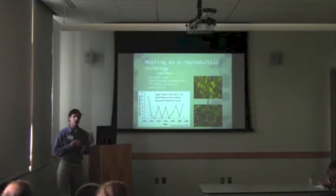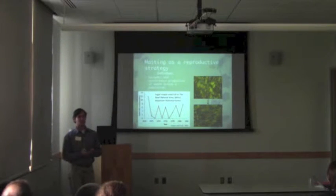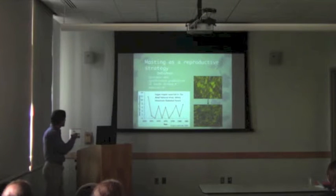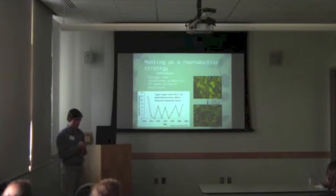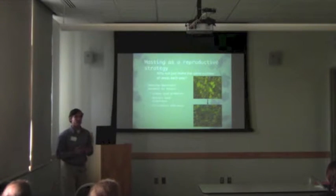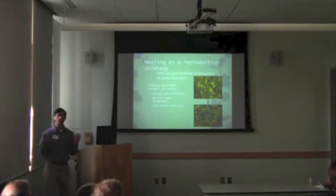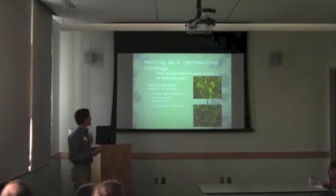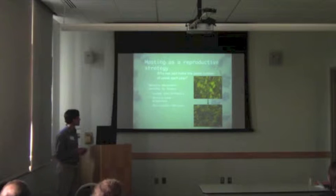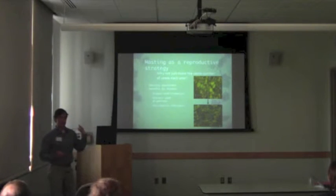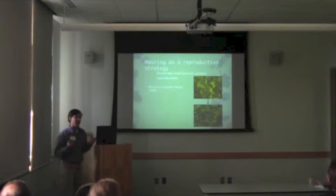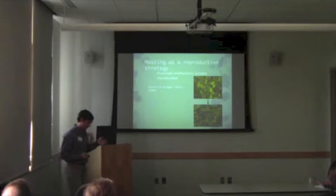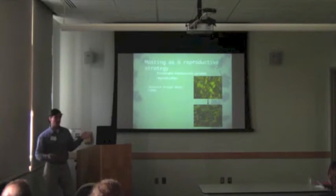That brings me to masting. Masting is the episodic and synchronous production of seeds across a population. This is a common masting pattern where you either have high seed production or low seed production. Masting is thought to have evolved because of various density-dependent benefits of concentrating reproduction in certain years, including increasing pollination efficiency, attracting seed dispersers, and having seeds escape seed predators in lean years. While these mechanisms provide an evolutionary impetus for masting, they don't actually explain how masting happens on a year-to-year basis.